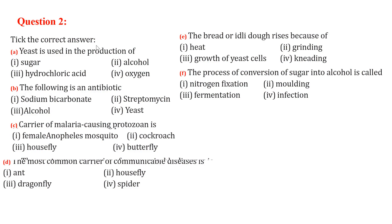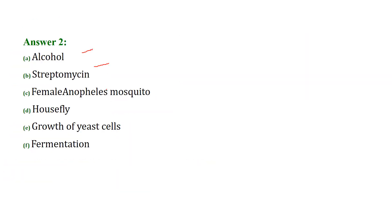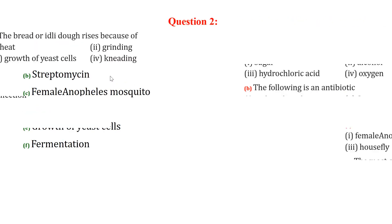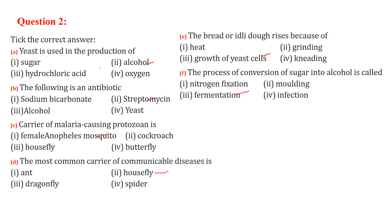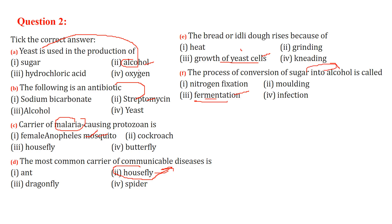Let's see all the answers: Alcohol - yeast is used in the production of alcohol. Streptomycin is an antibiotic. Female Anopheles mosquito is the carrier of malaria-causing protozoa and the most common carrier of communicable disease. Bread or idli rises because of yeast cell growth. Fermentation is used to convert sugar into alcohol.